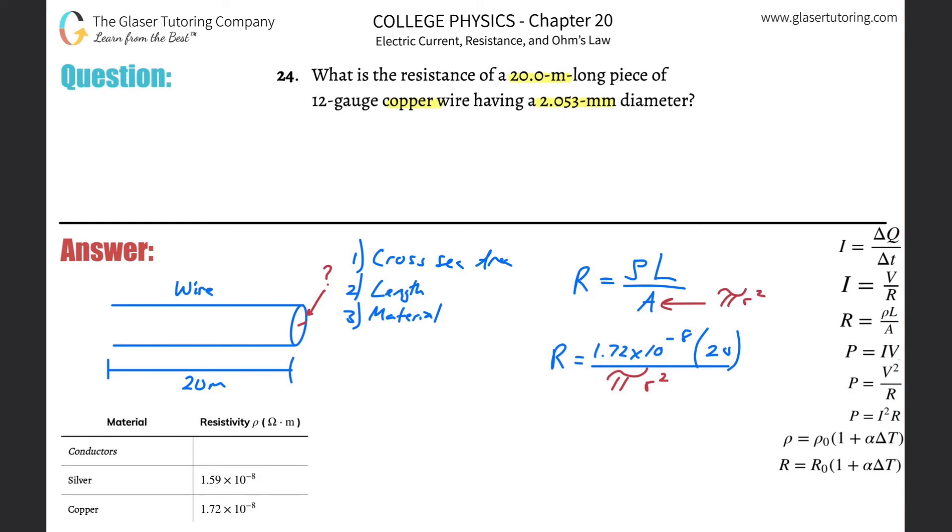And divide it by 2. That will equal the radius. But notice this is in millimeters, we need it in meters. So just take that value and multiply it by 10 to the minus 3.